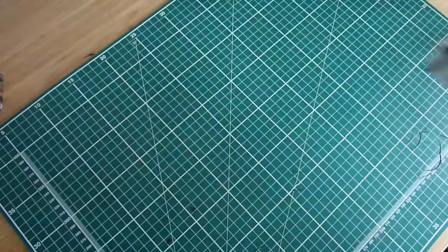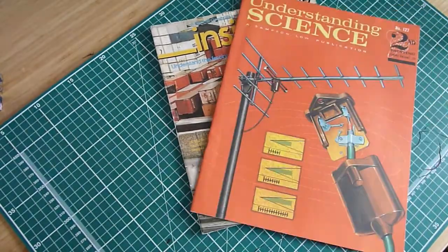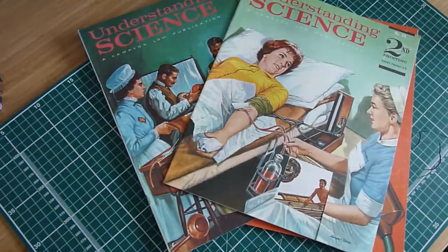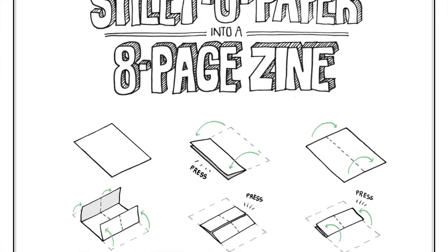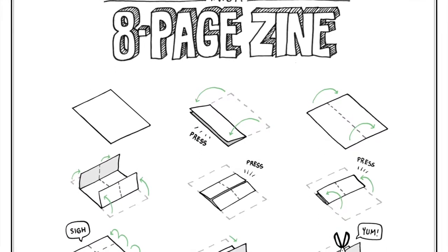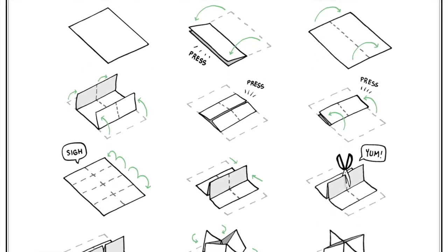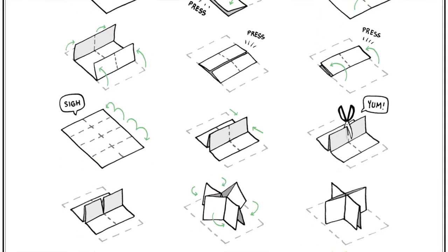One optional extra you might want are some collaging materials. I've got some old science magazines here, but you can use anything you've got lying around the house. Just make sure you've got permission to cut them up. You should also have a small handout that's going to represent what we're about to do.